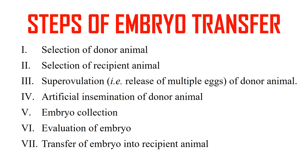The various steps of embryo transfer technology include: first, selection of donor animal; second, selection of recipient animal; third, super ovulation — the release of multiple eggs from the donor animal; fourth, artificial insemination of the donor animal; fifth, embryo collection; sixth, evaluation or checking of the embryo; and finally, transfer of the embryo into the recipient animal.